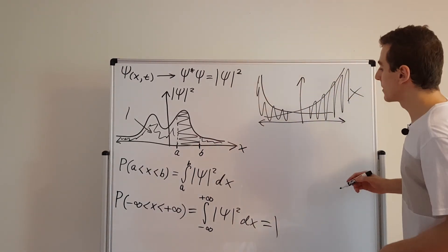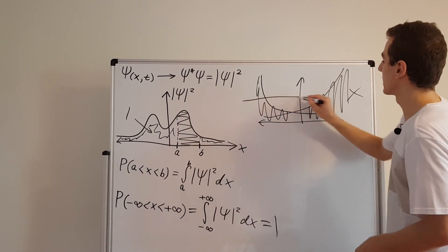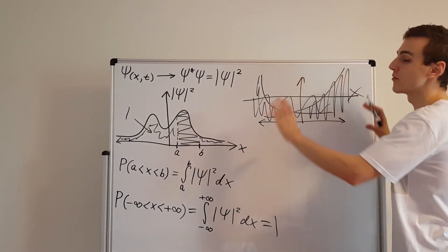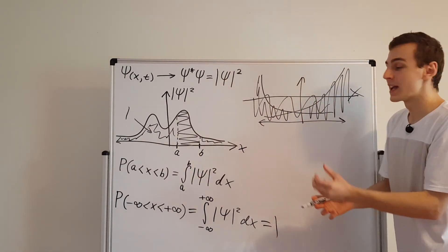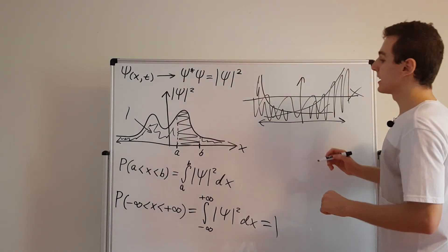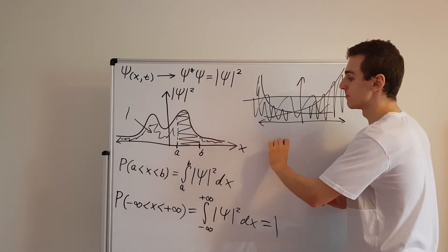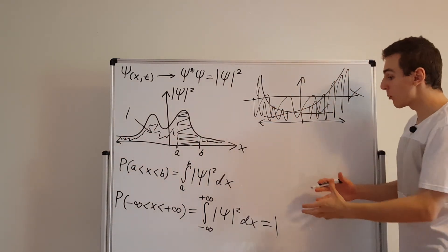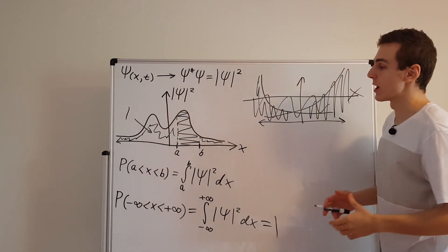What about something that is a constant function like this? Well, a constant function is going to have infinite area, so the area is not going to converge to a value. That means it's not normalizable. We need something that kisses the x-axis. That is essentially what we need. That is what's going to allow us to get a normalizable wave function.